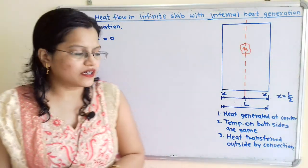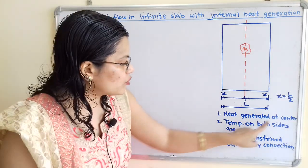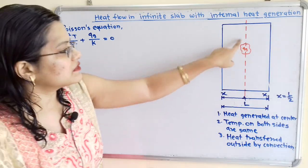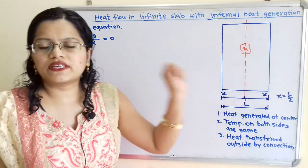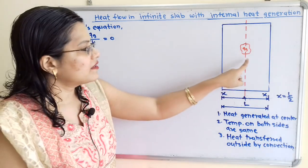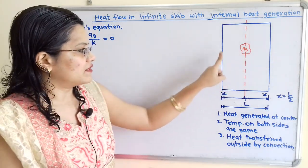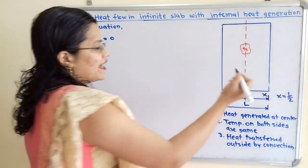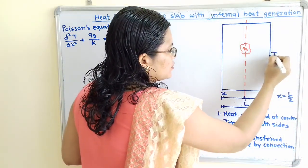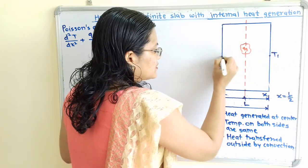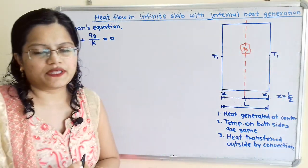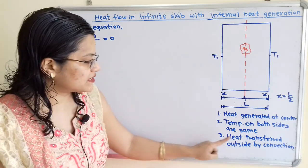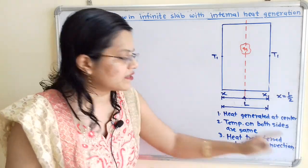Now for the second condition: temperature on both sides are the same. Since the heat source is at the center and heat is conducted equally to both sides, the temperature on both sides is the same. We show temperature T1 at one wall and the same temperature T1 at the other wall. The third condition is that heat transfer to the outside is by convection.